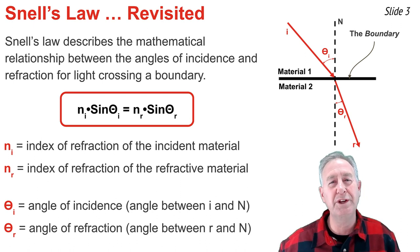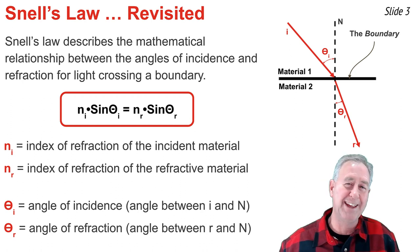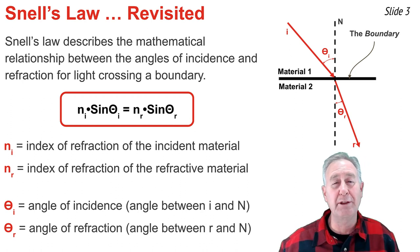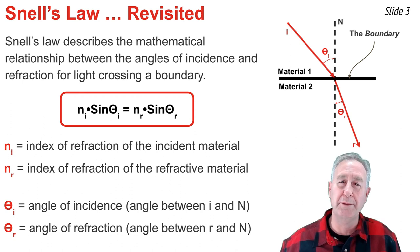It's important to note that the angle of incidence is the angle between the incident ray and the normal line, and the angle of refraction is the angle between the refracted ray and the normal line.